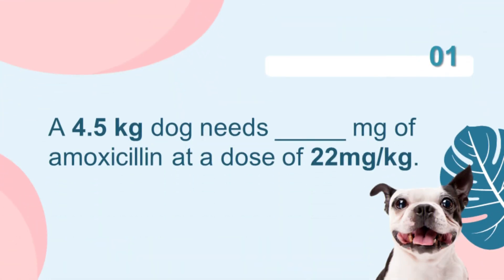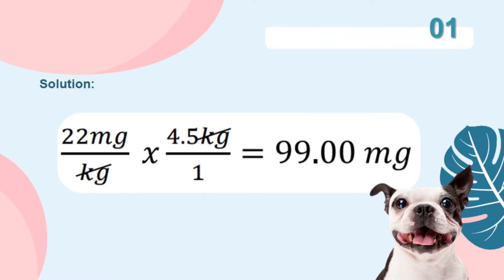For the first problem: A 4.5-kilogram dog needs how many milligrams of amoxicillin at a dose of 22 milligrams per kilogram? Solution: We just have to multiply 22 milligrams per kilogram by 4.5 kilograms, which is the weight of the dog. We come up with the answer: 99 milligrams of amoxicillin.